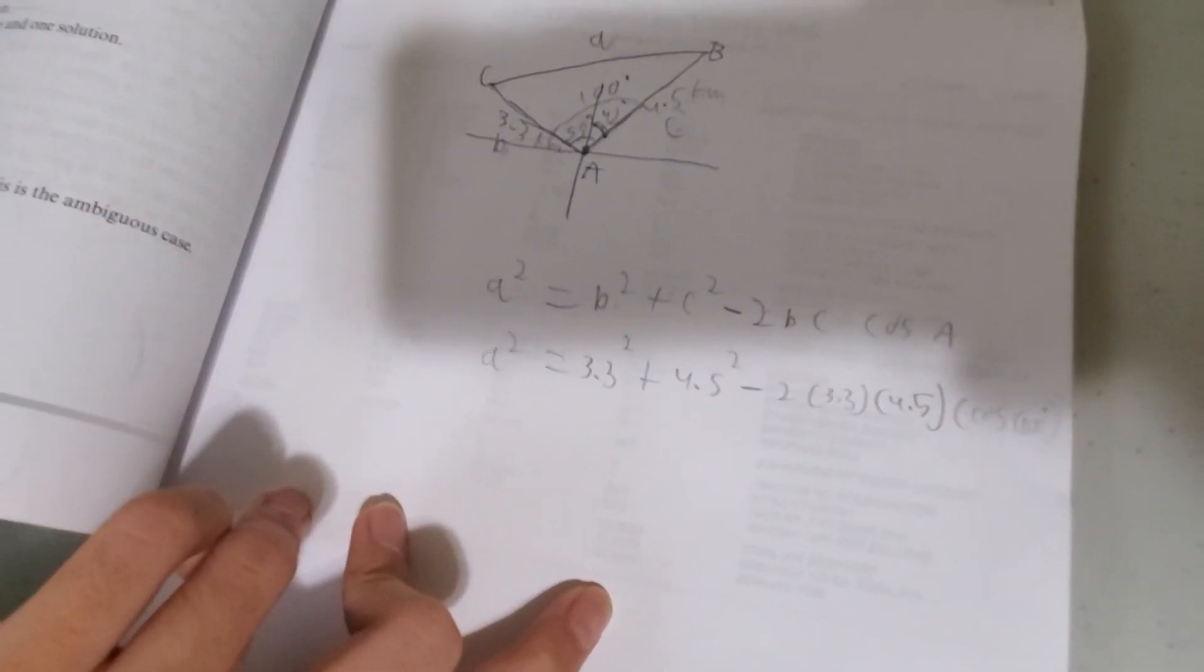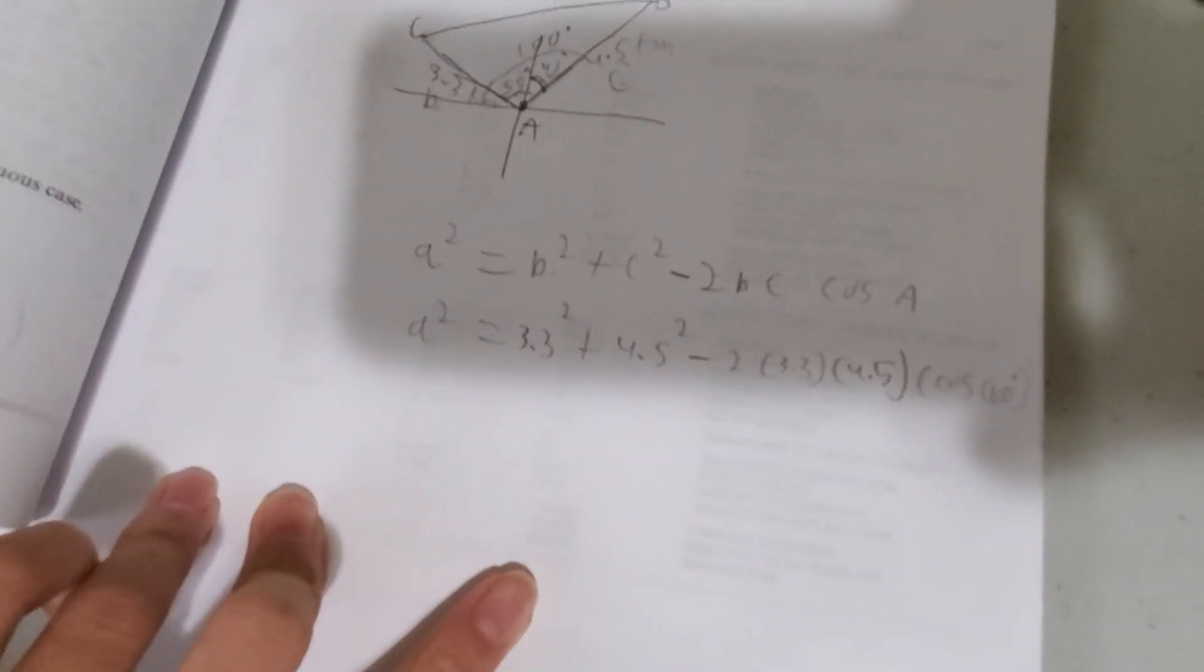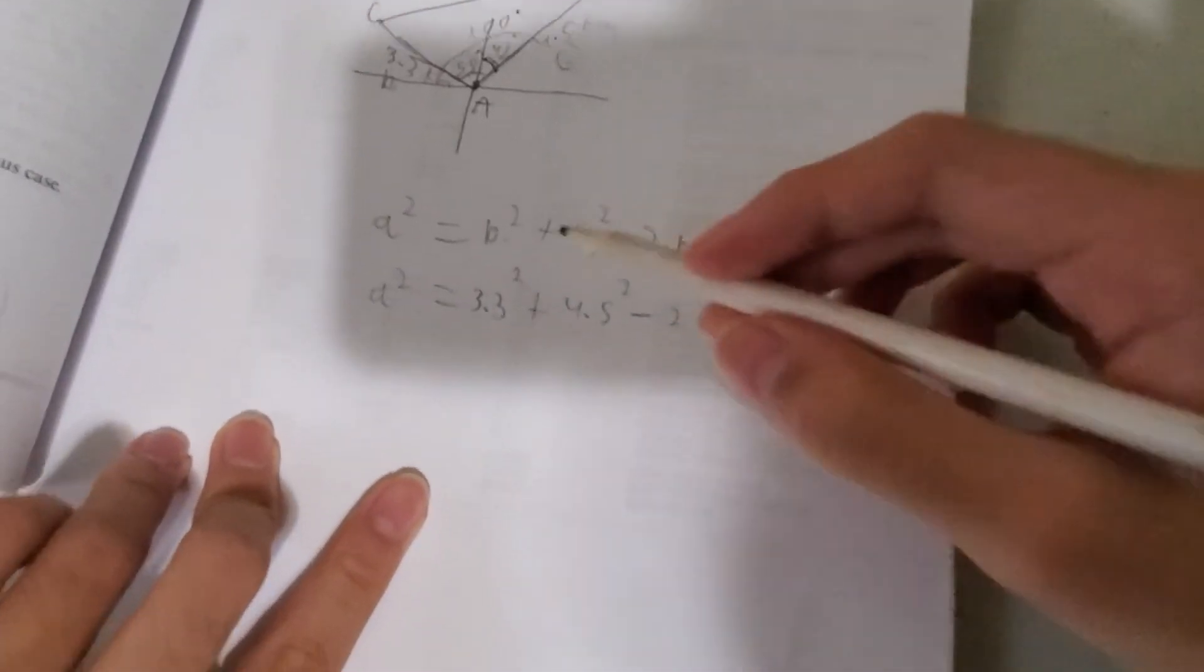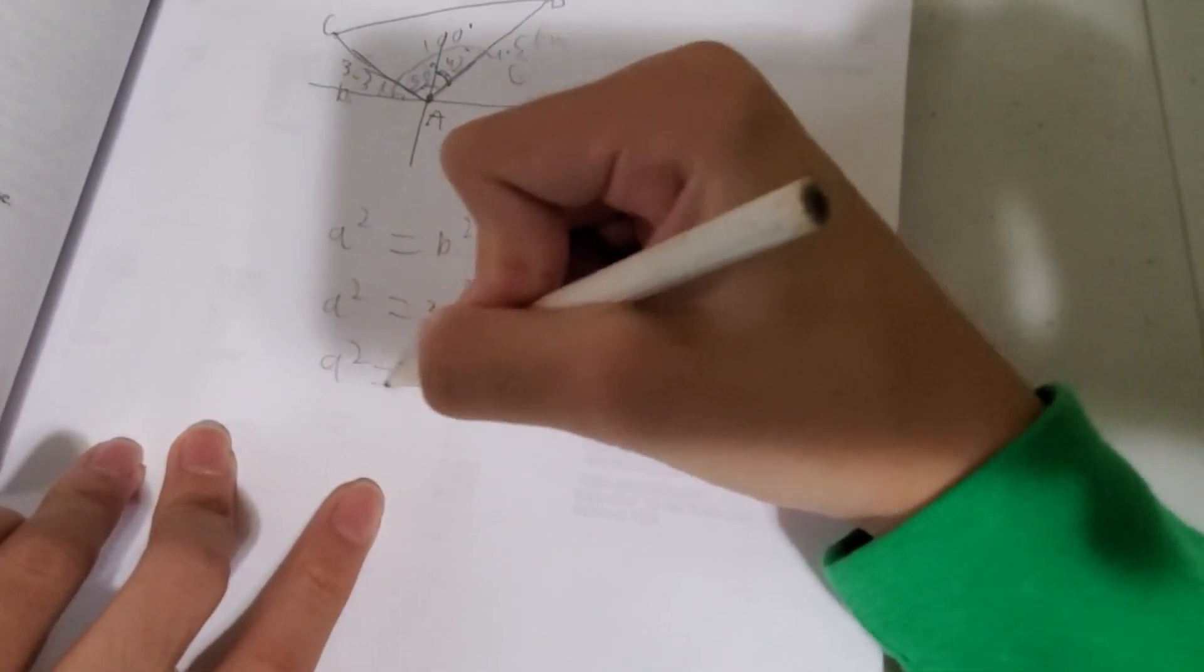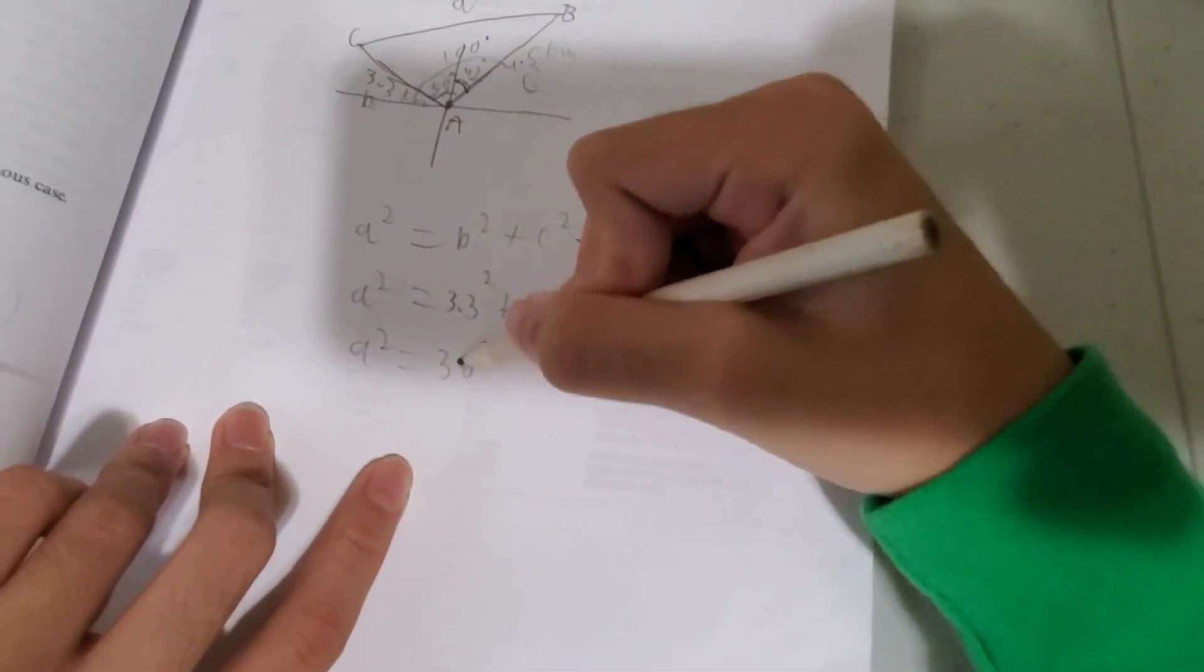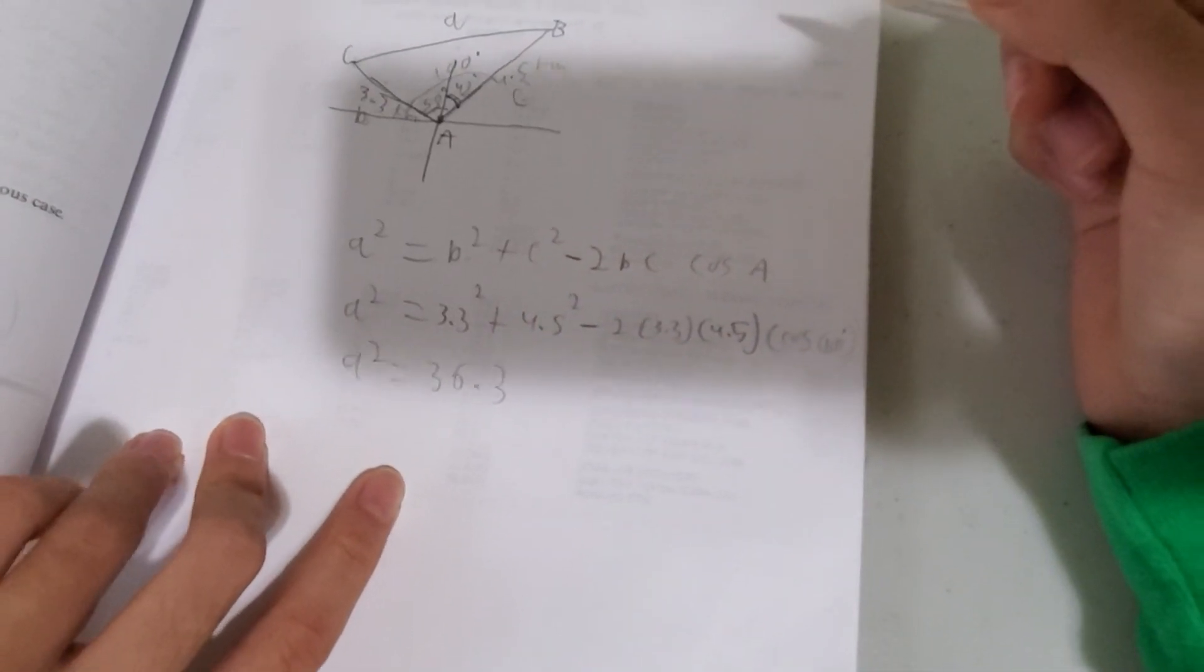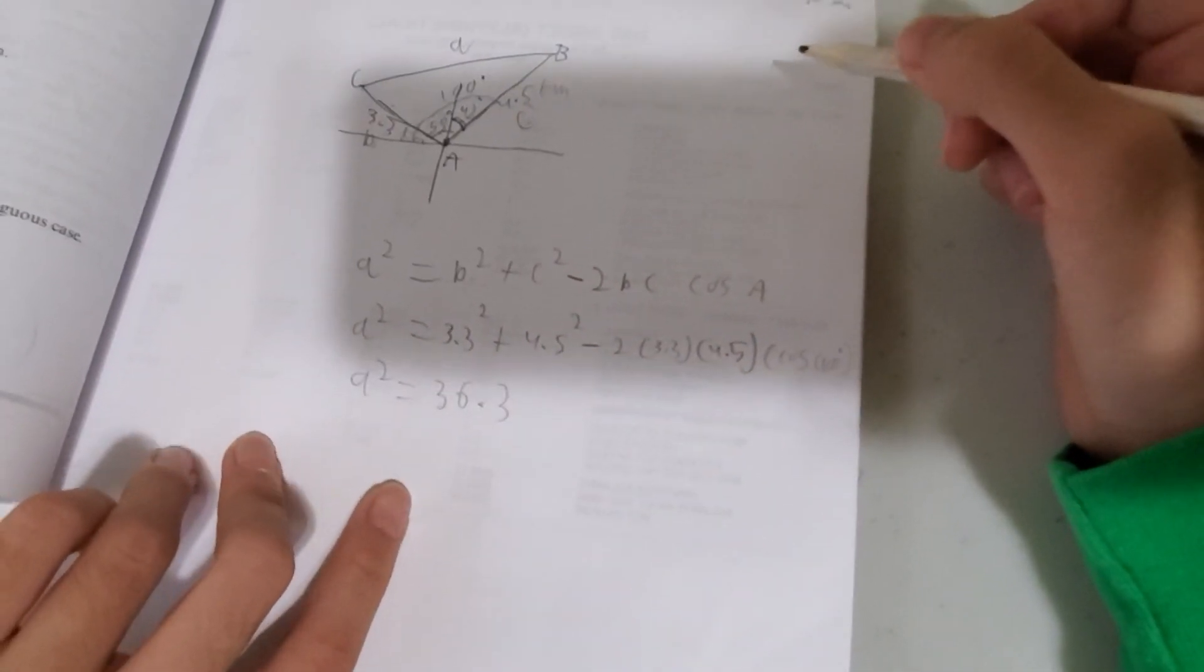Alright. So after doing some simplifying, I'm just going to skip the simplifying, and you're going to get a value that A squared equals 36.3 kilometers squared.